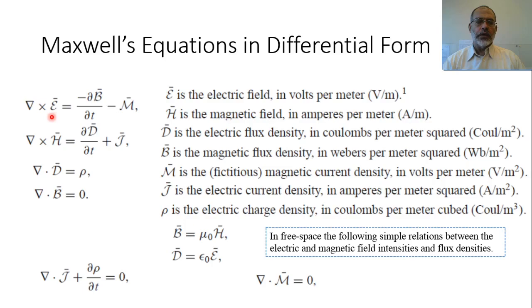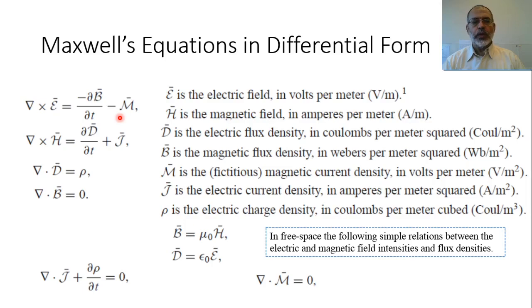The first equation is the rotation of the electric field, equals minus the derivative with respect to time of the magnetic flux density, minus the magnetic current density M. Effectively, there is nothing called magnetic current. But the concept of magnetic current density is defined as an approximation or as a hypothetical definition which simplifies some relations related to the electric field.